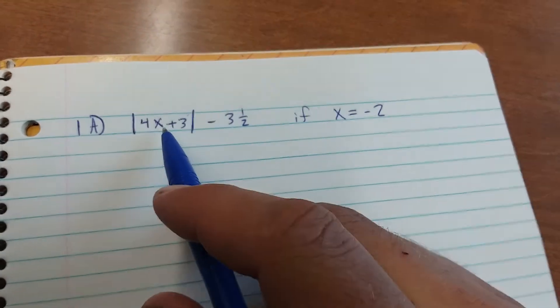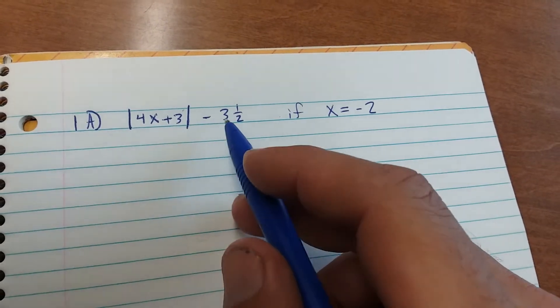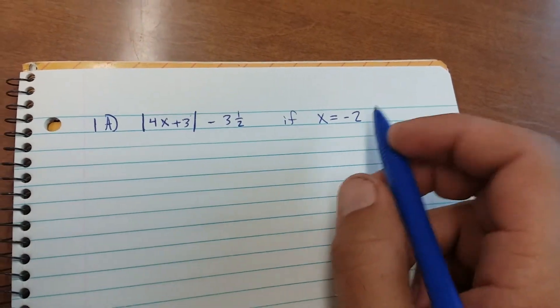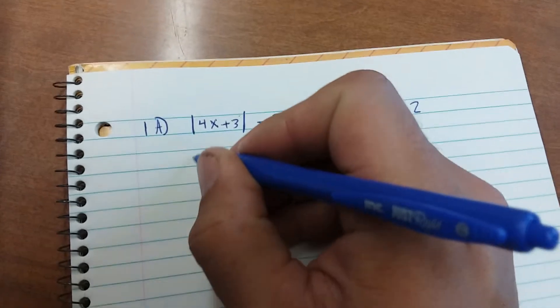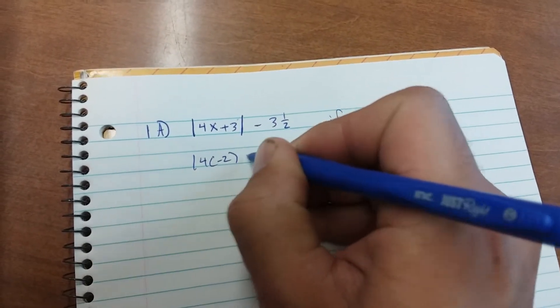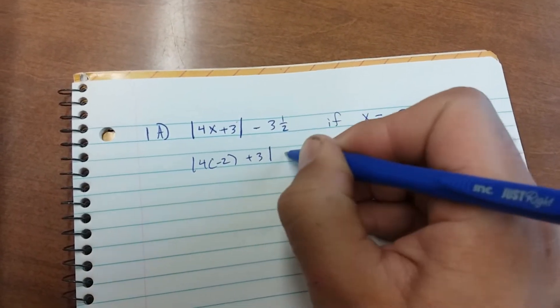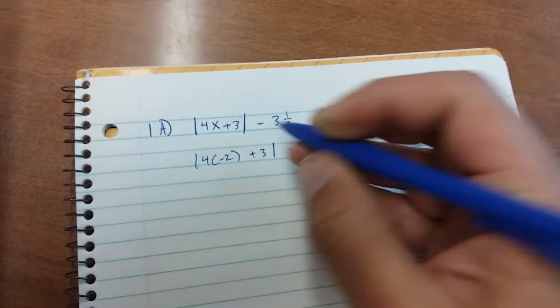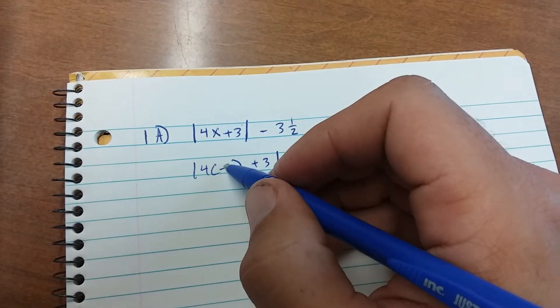Alright, so evaluate this. The absolute value of 4x plus 3 minus 3.5 if x equals negative 2. So we're going to replace x with negative 2 and solve. You get the absolute value of 4 times negative 2 plus 3 minus 3.5. Make sure when you replace the x here you put the parentheses around it. That way you know you're multiplying.